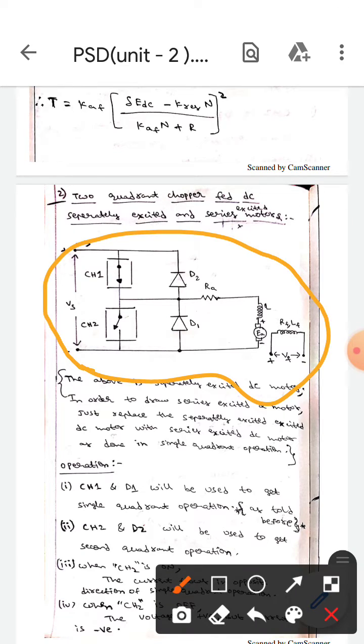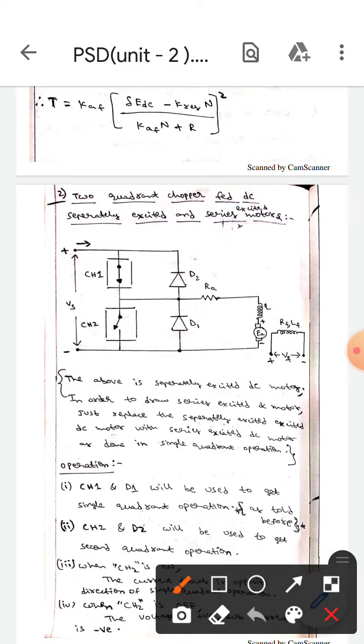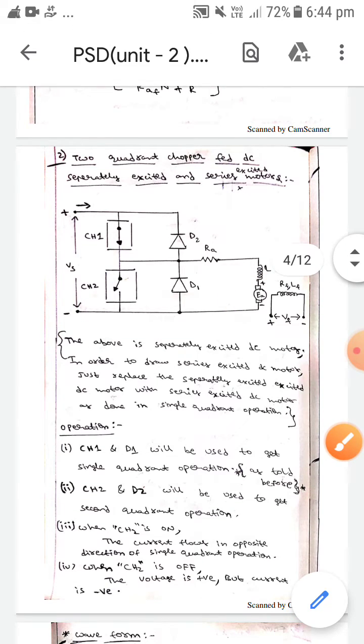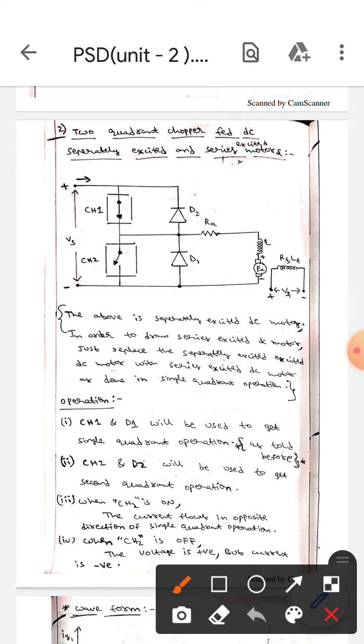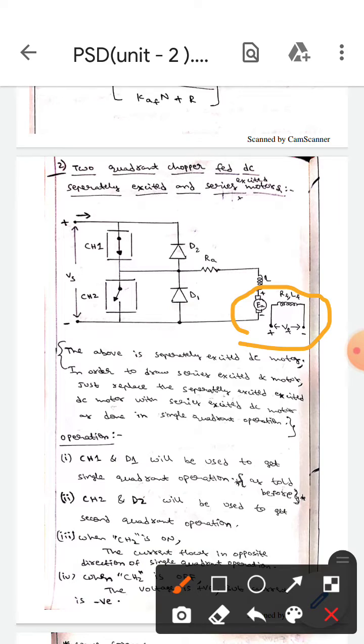For DC separately excited motor, if you want to draw the series excited motor, then in place of the separately excited motor we will put the series excited motor. That's it. I already told you how to draw the series excited DC motor. Let's check it out in the single quadrant operation video.